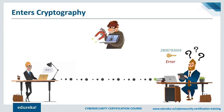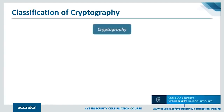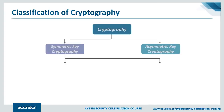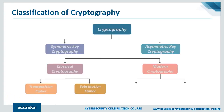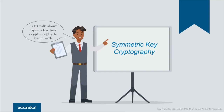In modern cryptography, the security of the system purely relies on keeping the encryption and decryption keys secret. Based on the type of keys and encryption algorithms, cryptography is classified into two broad categories: symmetric key cryptography and asymmetric key cryptography, also known as public key cryptography. Symmetric key cryptography is further classified as classical cryptography and modern cryptography. Classical cryptography is divided into transposition cipher and substitution cipher, while modern cryptography is divided into stream cipher and block cipher.